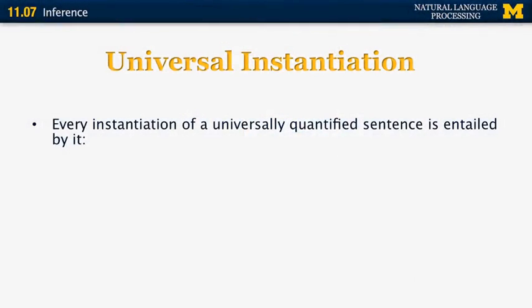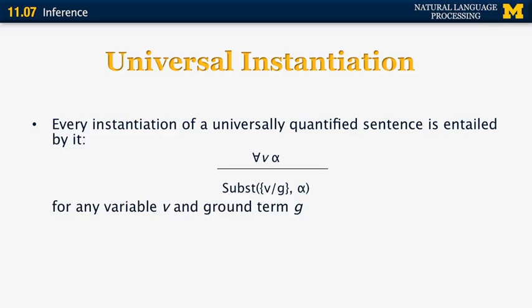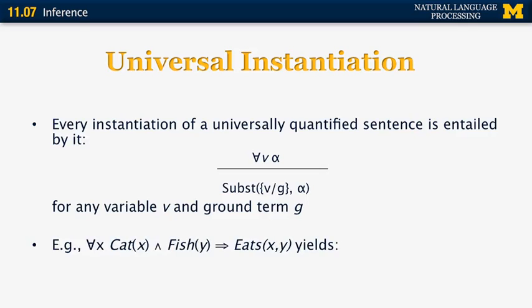Now let's look at universal instantiation in a bit more detail. Every instantiation of a universally quantified sentence is entailed by it. So if we know that for all V, alpha is true, we can infer that any substitution where V is replaced by a specific ground term G is also true for alpha. For example, for all X and Y, cat(X) and fish(Y) implies eats(X, Y). This can be substituted as: Martin is a cat and blob is a fish implies that Martin eats blob.